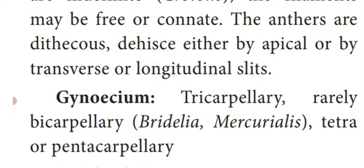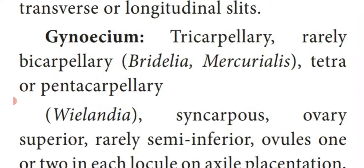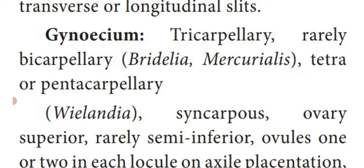The filaments may be free or connate — joined together. Anthers are two-lobed, dithecous. They will dehisce or split by apical pore, or by transverse or longitudinal slit. Gynoecium contains three carpels — tricarpellary — but rarely they show two carpels, bicarpellary in Bridelia and Mercurialis.